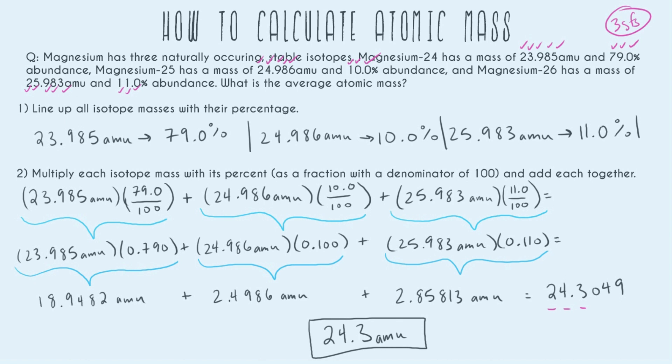So if we look at our original isotope masses, 23.9, we had 24.9 and 25.9. And so we know that our lightest one is 23.9, and that takes up the most. That's almost 80% of the isotopes. So it makes sense that our answer is pretty close to 23.9. It's just a little bit higher than that because we had 10% and 11% of higher isotopes. So this checks out, and this is my average atomic mass.